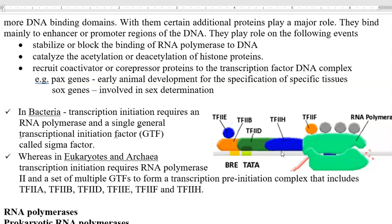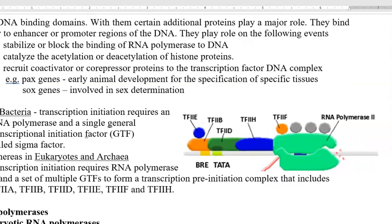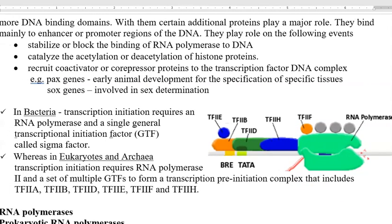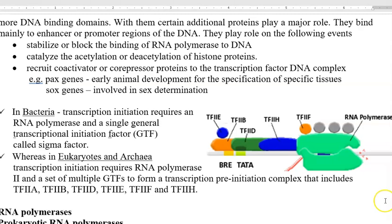In eukaryotes and archaea, transcription initiation requires RNA polymerase II and several sets of general transcription initiation factor proteins. Together they form transcription pre-initiation complexes, which are arranged on the gene as shown in the diagram. These multiple general transcription initiation factors include TF2A, TF2B, TF2D, TF2E, TF2F, and TF2H. All these factors along with the RNA polymerase enzyme join together to initiate transcription in eukaryotic organisms and archaea.